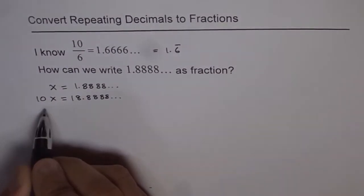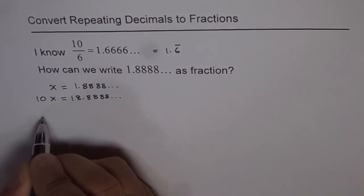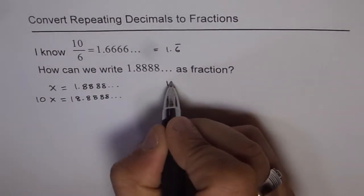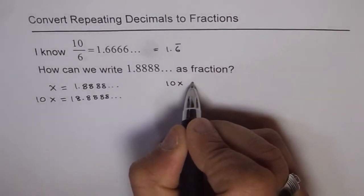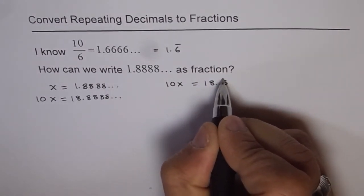Now, if we take away x from 10x, then what do we get? That is to say, what I'm doing here is: 10x equals 18.8 recurring.